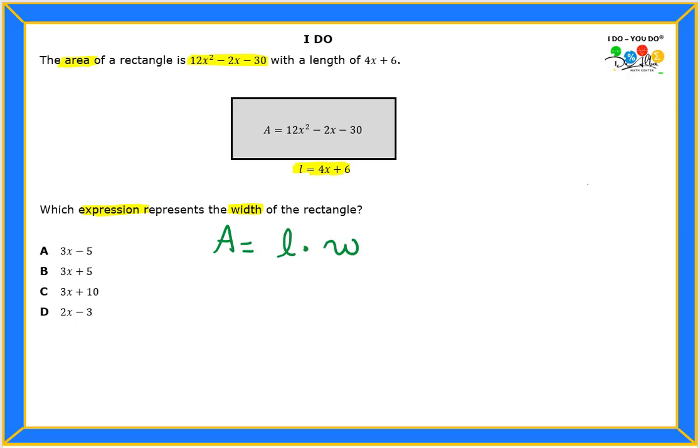So if the area is, and I'm going to write it down a little bit more to the left so that I have enough space, that would be 12x² - 2x - 30 equals, because that's the area.